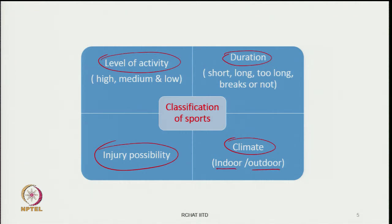We can also classify sports according to injury possibility — in some sports it is highly injurious and possibilities of injury could be fatal. We can also classify them according to climate, meaning whether it is an indoor or outdoor sport. Many sports are indoor like badminton, whereas football and hockey are outdoor sports. These are all very important ways of classifying sports when thinking of designing sports gear.